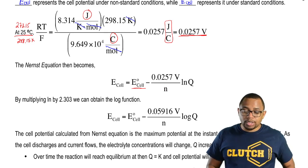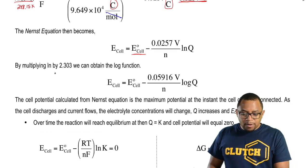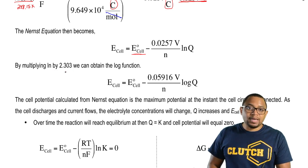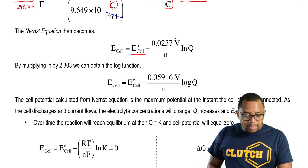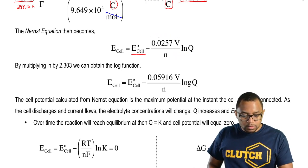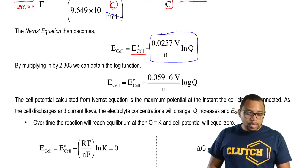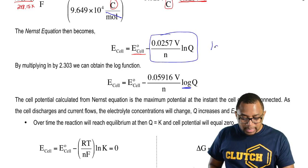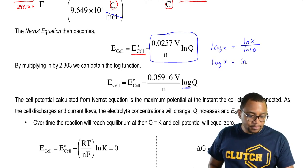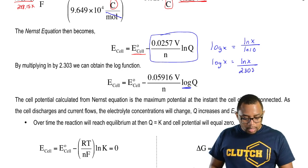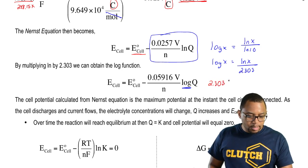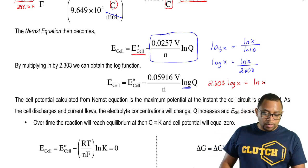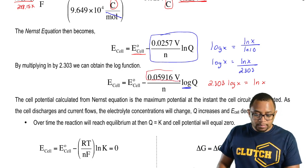Remember, Q is just your reaction quotient. If we multiply ln by 2.303, we can obtain the log function. Multiplying this portion by 2.303 gives a new value of 0.05916 volts divided by N times log(Q). This is because log(x) equals ln(x) divided by ln(10), which equals 2.303. Multiplying both sides by 2.303 establishes this new relationship.